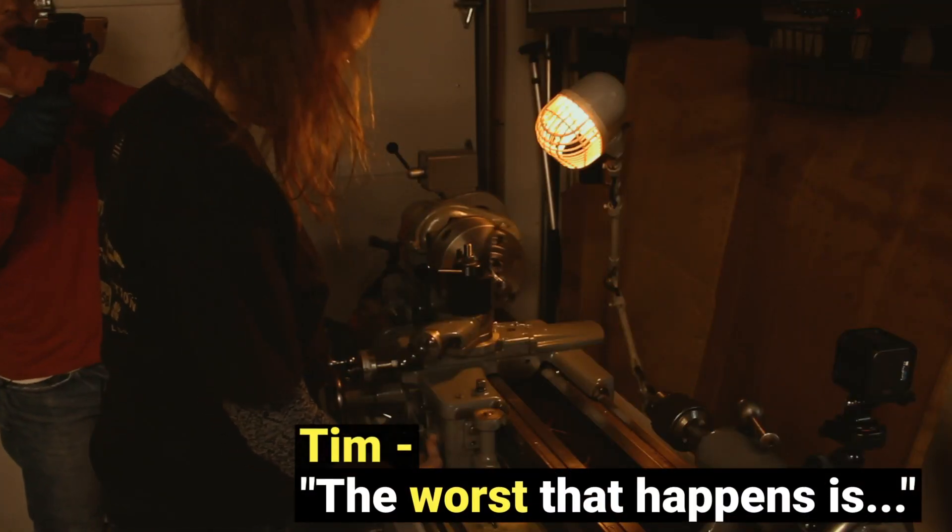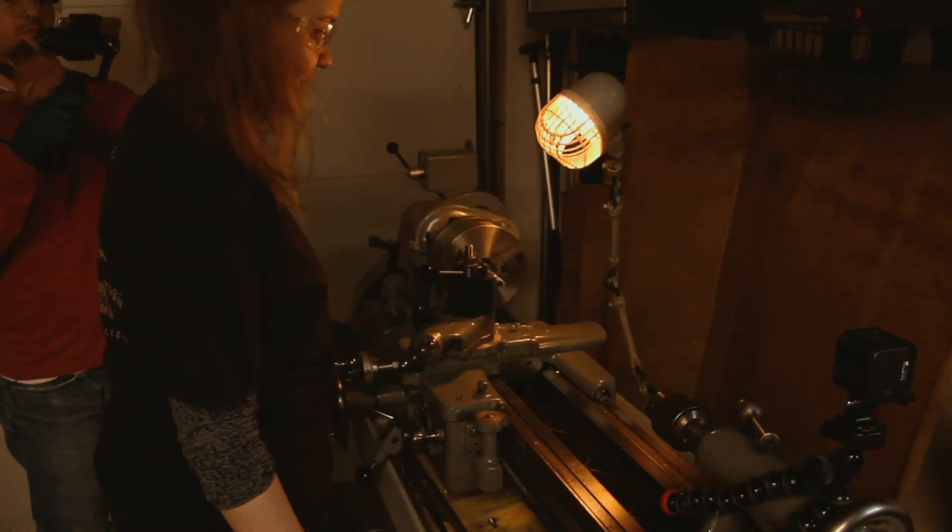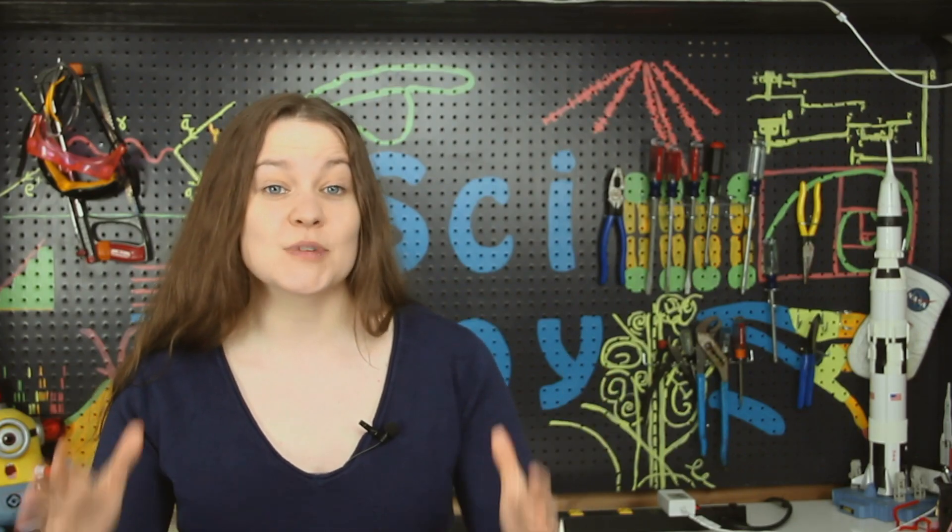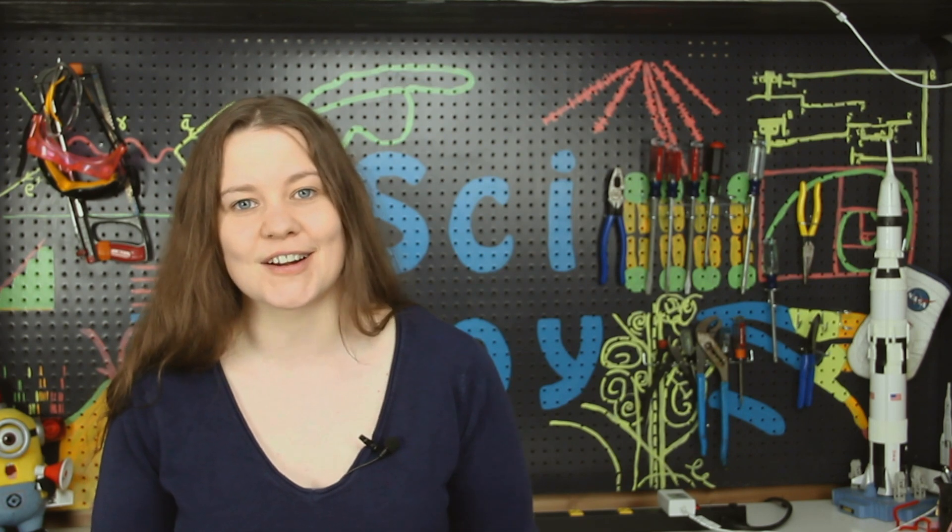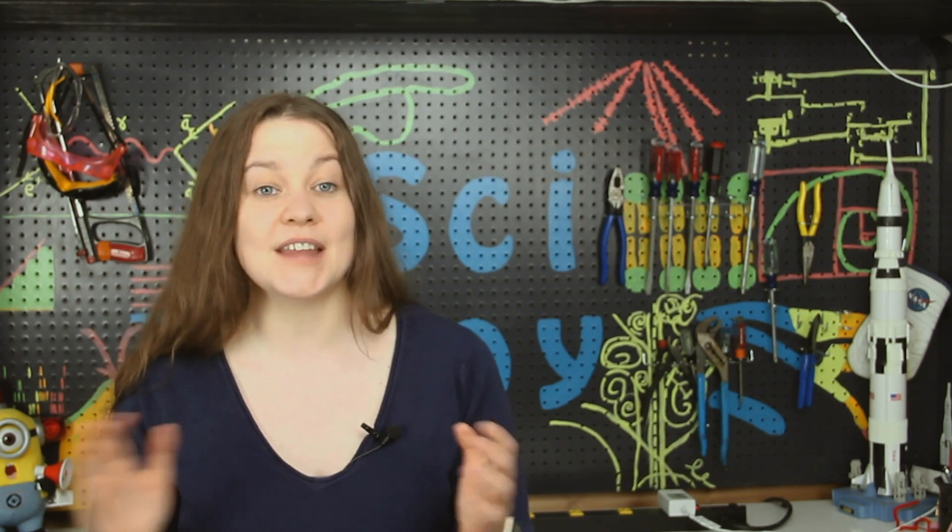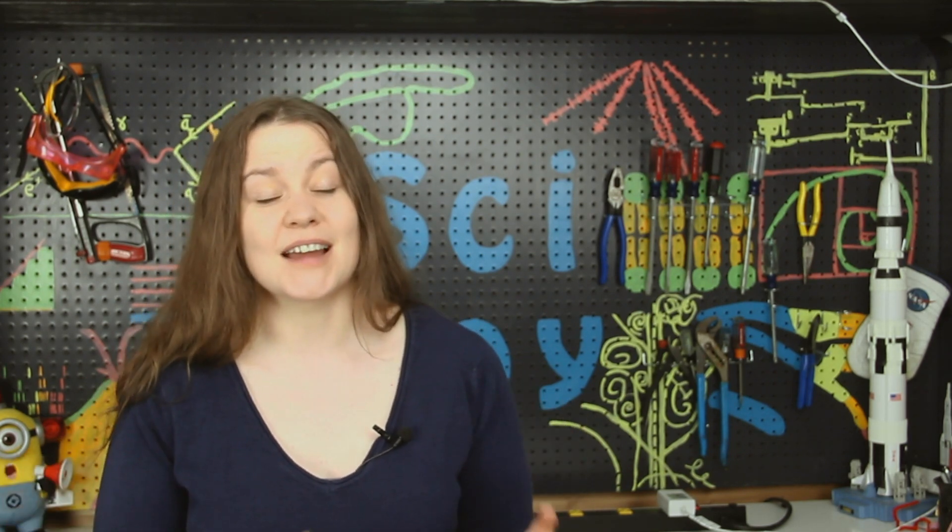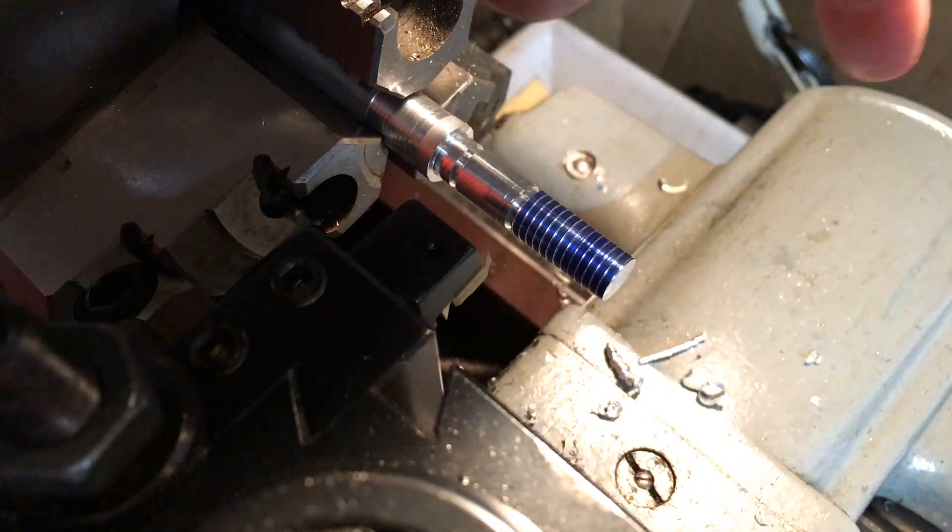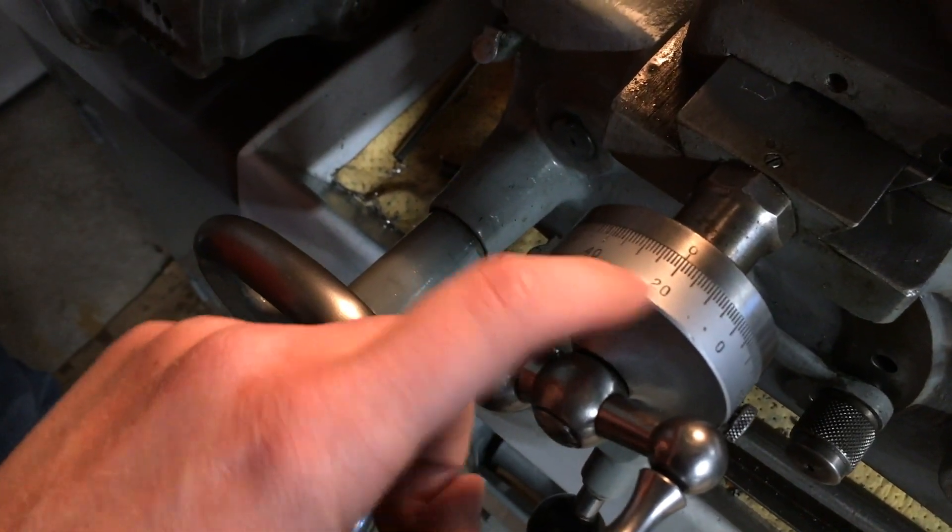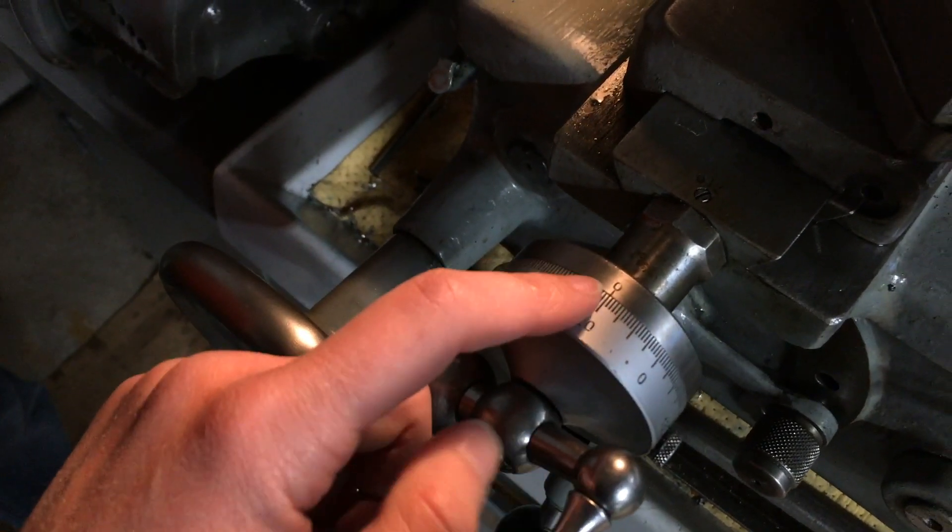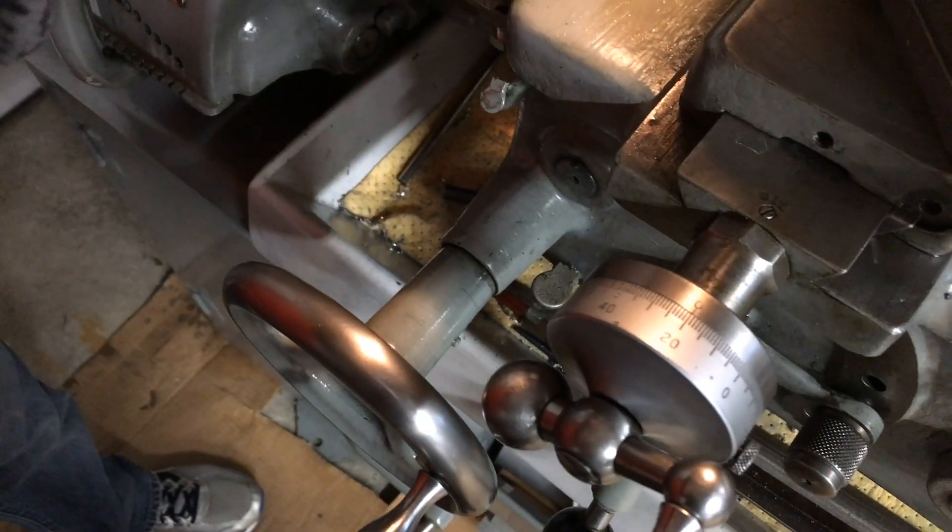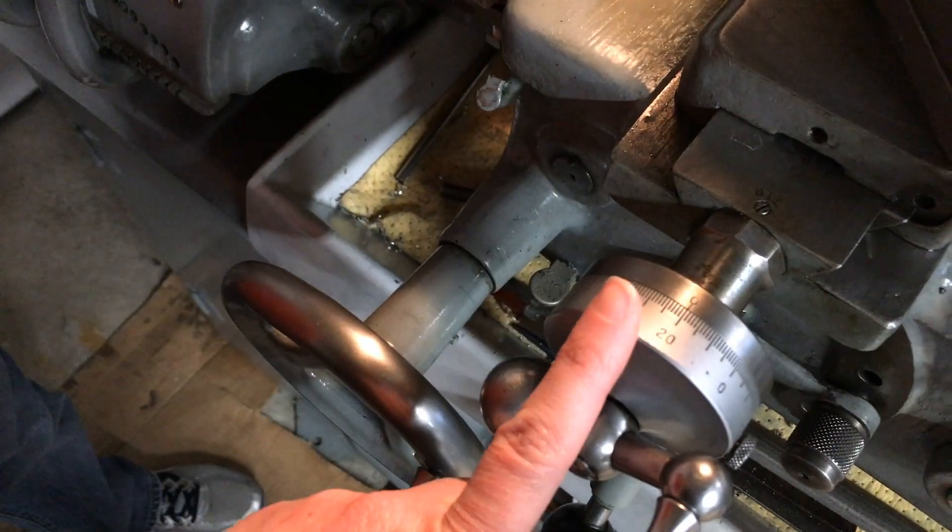The worst that happens. And after our first pass, we celebrated by finally eating dinner. And during dinner, Tim looked up the depth that we needed for our threads on easybusinessfinance.net, which I don't think I recommend. Look what I did. And I got to use this dial, and we start at zero when we're against the part. And then I have to go 76 thousandths in, and that's going to give us the thread that we need. I hope.